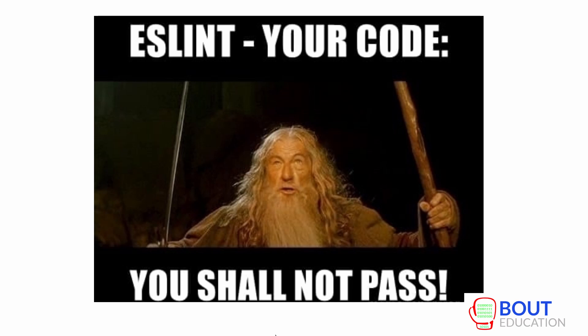In the previous video, we went over implementing Prettier ESLint automation as a pre-commit git hook in a Node.js project using lint-staged. In this drill, we'll do something very similar, but specifically to a ReactJS and Express monorepo.